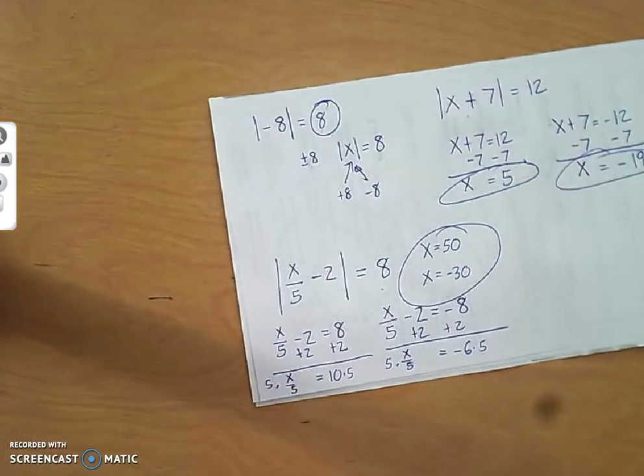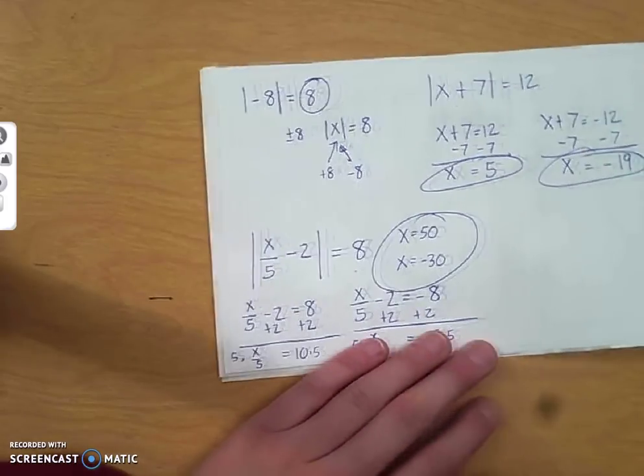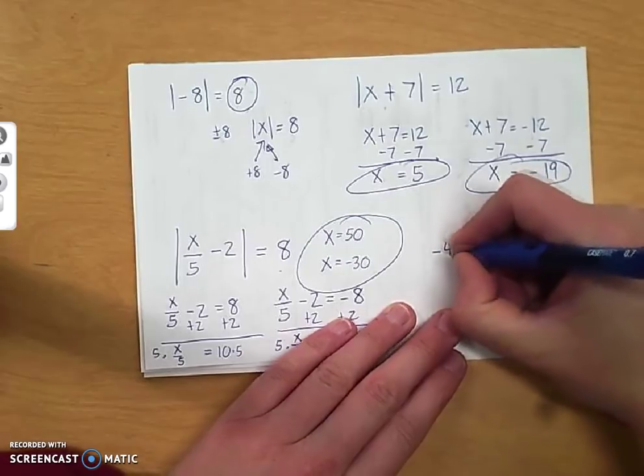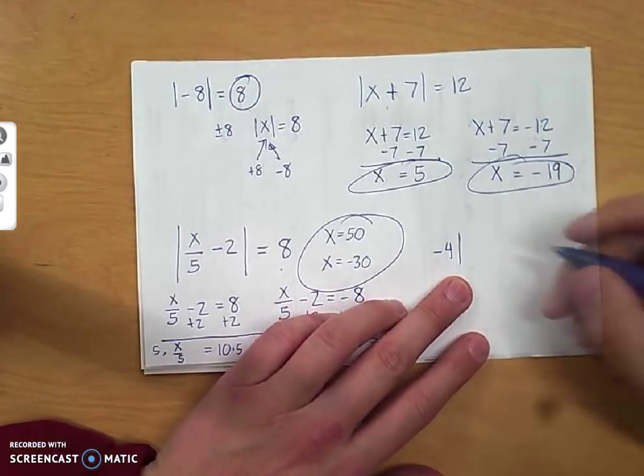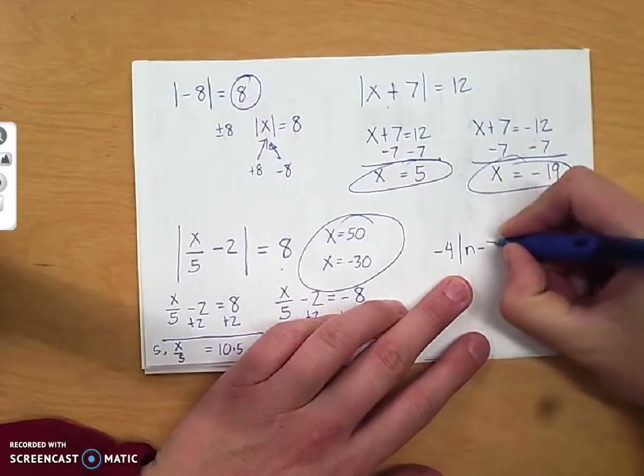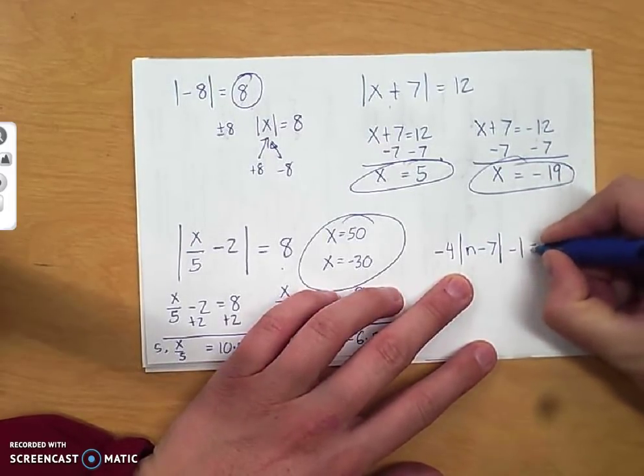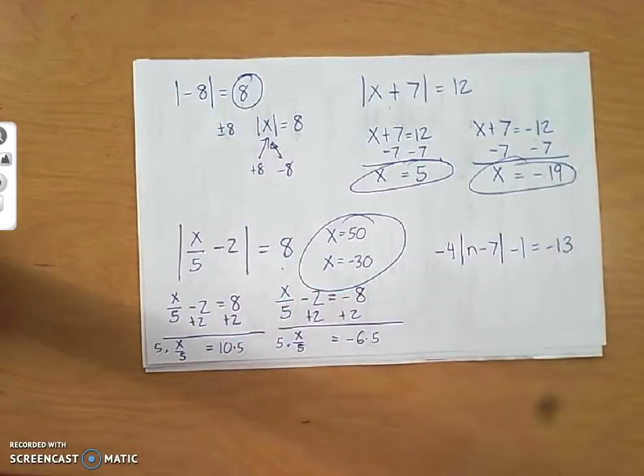Our next one. We have negative 4 times the absolute value of n minus 7, minus 1 equals negative 13. You have to get the absolute value by itself first. Let me say that again. You have to have absolute value by itself before you set it equal to positive and negative.